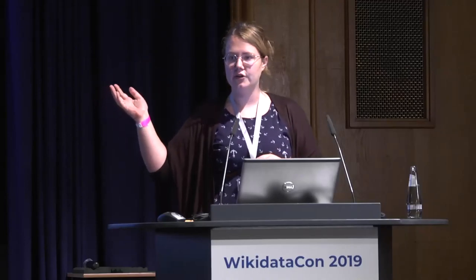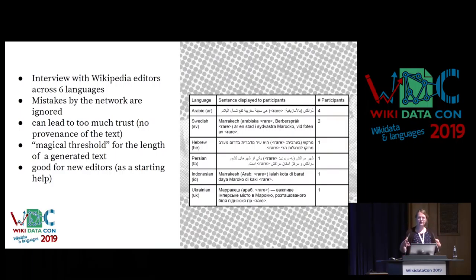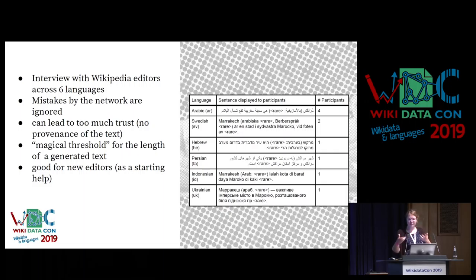For example, in the Arabic version, the model gave the wrong location for Marrakesh. Even people I interviewed who were living in Marrakesh didn't pick up on that — because it's on Wikipedia, so it should be fine. We also found a magical threshold for the length of generated text. People complained that content translation was very hard because you're just doing post-editing and don't have the creativity. But one sentence was helpful, because even if it made mistakes, people were still willing to fix them since it's a very short intervention.